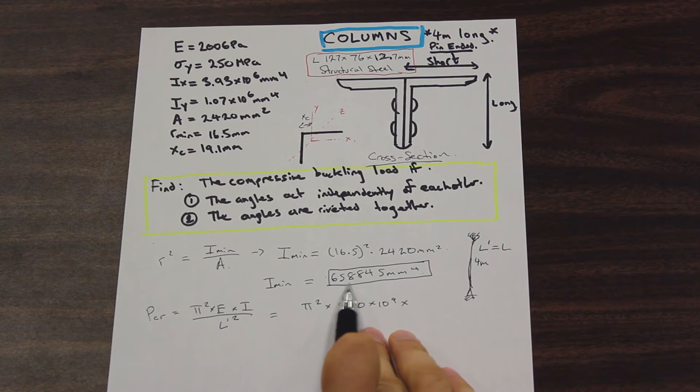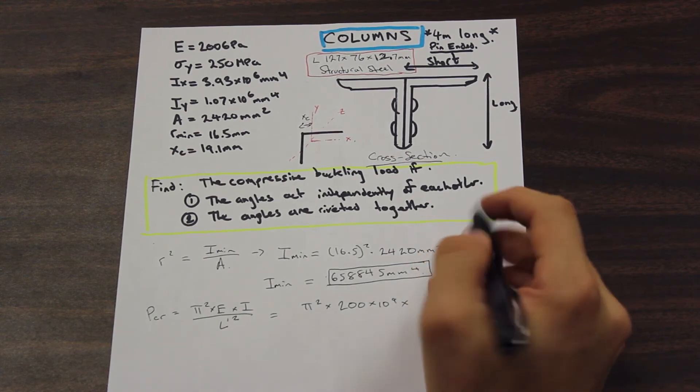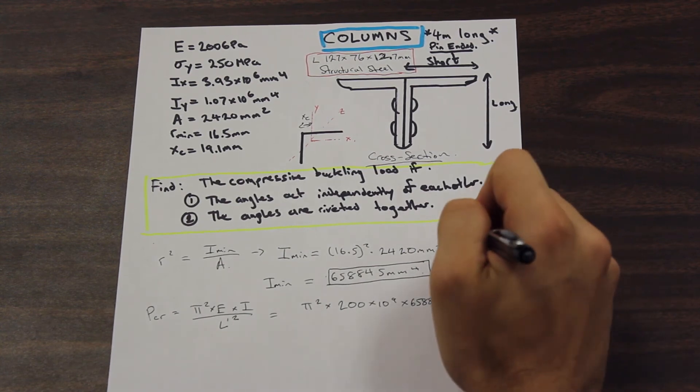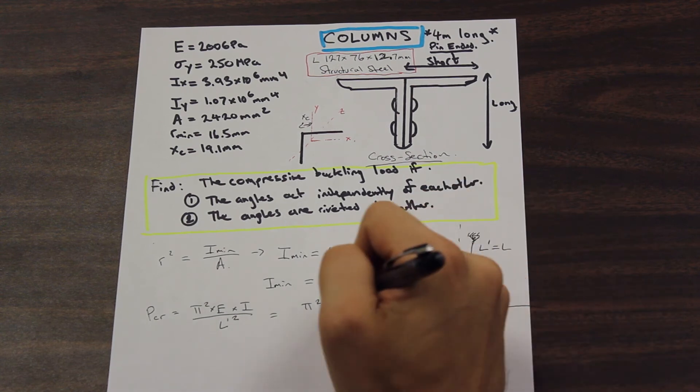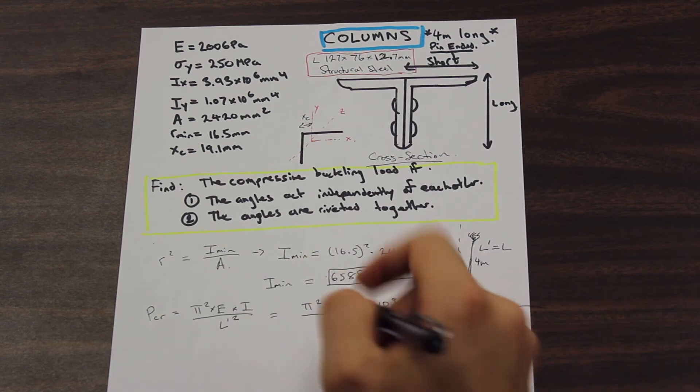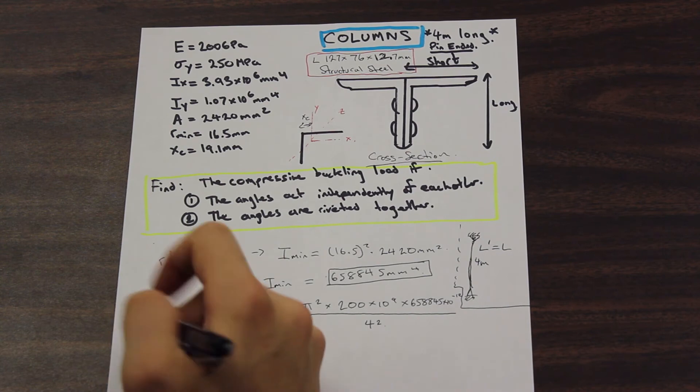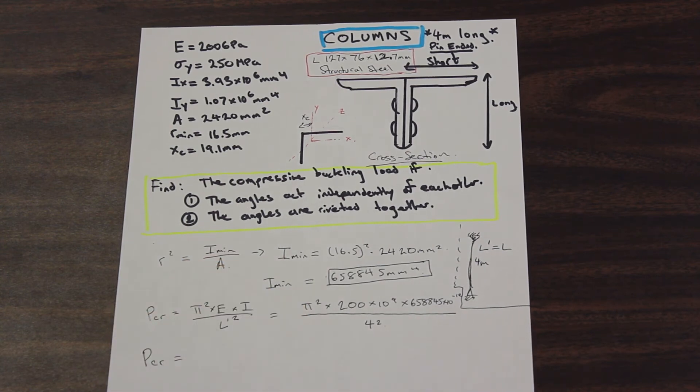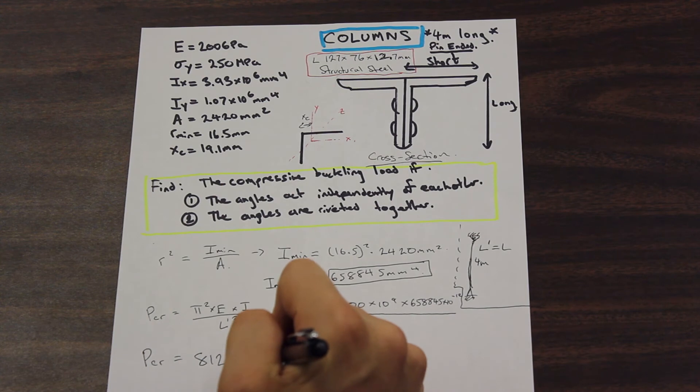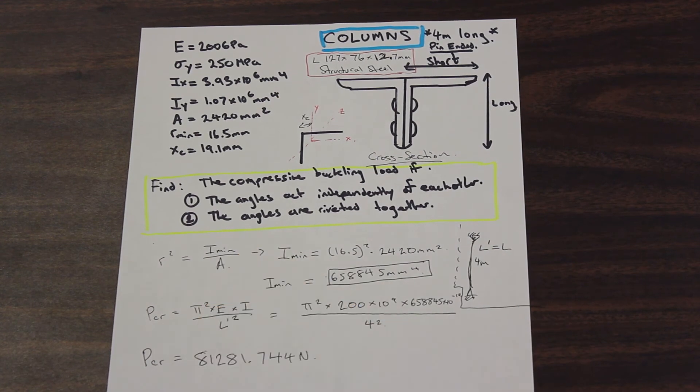So we have our E value, which is 200 GPa. So we're going to turn that into Pa. We're going to work with meters in this question, so that's times 10 to the 9. So we have our moment of inertia here, which is in millimeters to the fourth. So let's go ahead and convert that to meters to the fourth. 6.58845 times 10 to the negative 12. Let's make a box here so we don't get confused. That's times 10 to the negative 12, and we have our length, which is 4 meters. So we're just going to go ahead and plug that in. Again, that's going to be squared, and that is going to give us our critical buckling load, which is going to be 81,281.744 newtons.